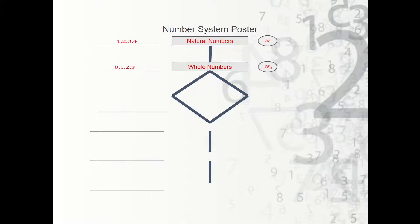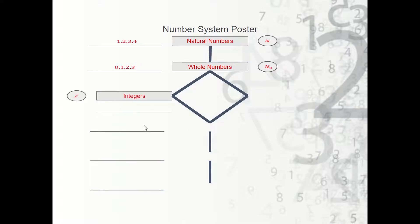Once we learned about zero, the next thing we learned was there are numbers on the other side of zero — negative numbers. We call those integers, and the symbol for integers is Z. Integers include all the whole numbers — natural numbers and zero — plus the negative versions of them. So integers include ..., −2, −1, 0, 1, 2, etc.